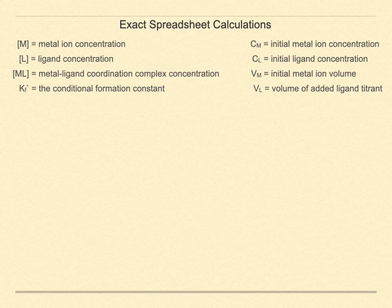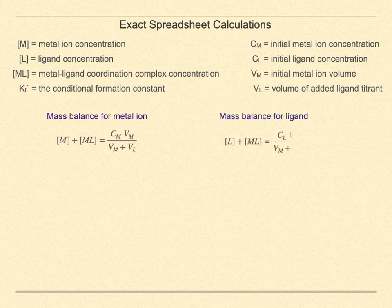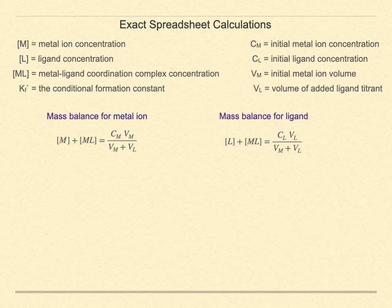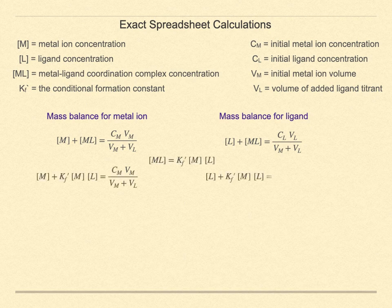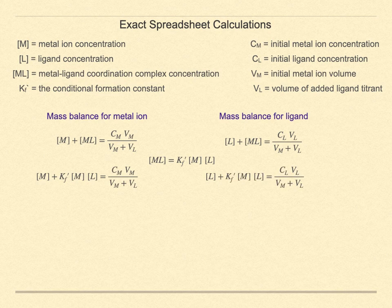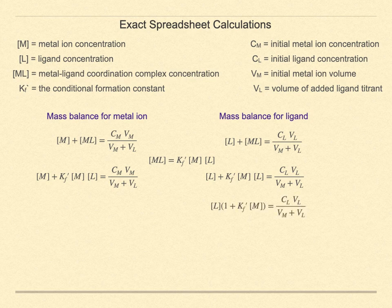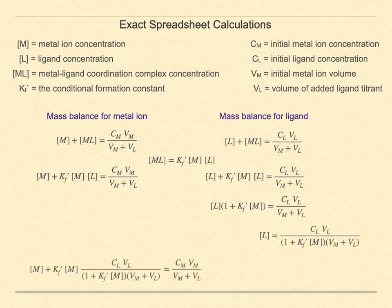We start with the mass balance expressions for both the metal ion and the EDTA ligand. They are just expressions for the total amount of metal ion and the total added ligand, divided by the total volume. The ligand and the metal ion are either free or in that complex. From the equilibrium relation, we can replace the expression for the metal-ligand complex concentration as follows. We are going to substitute for the ligand concentration, so we will work first with that expression.